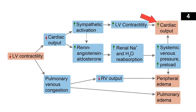Going back to the diagram: decreased cardiac output and low blood pressure stimulate RAAS, causing sodium and water retention, which increases systemic venous pressure and preload, helping to increase cardiac output. That's the positive effect. Unfortunately, the increased fluid and venous pressure also lead to peripheral edema — an unfortunate side effect of these compensatory mechanisms.